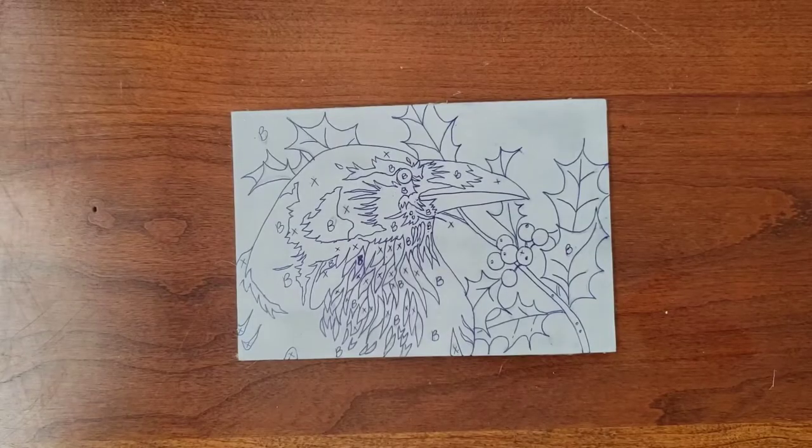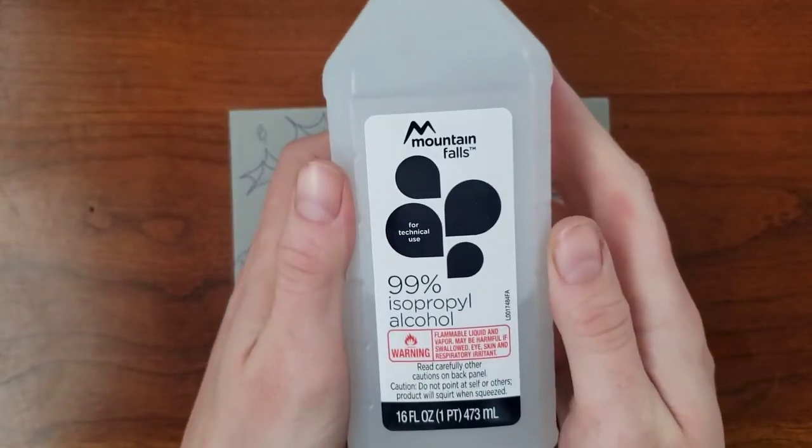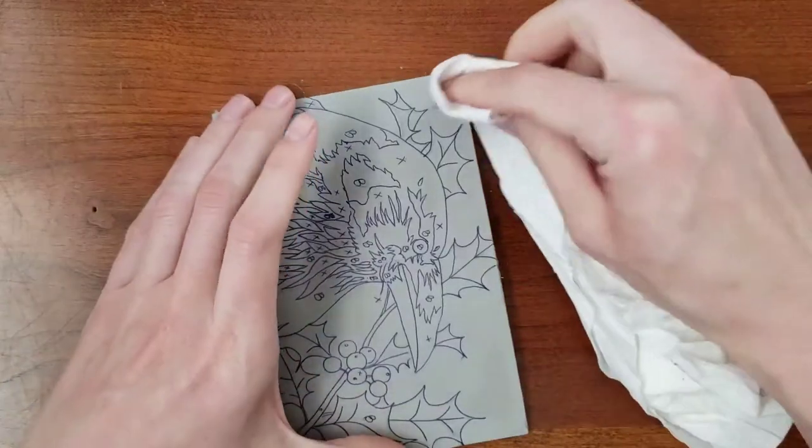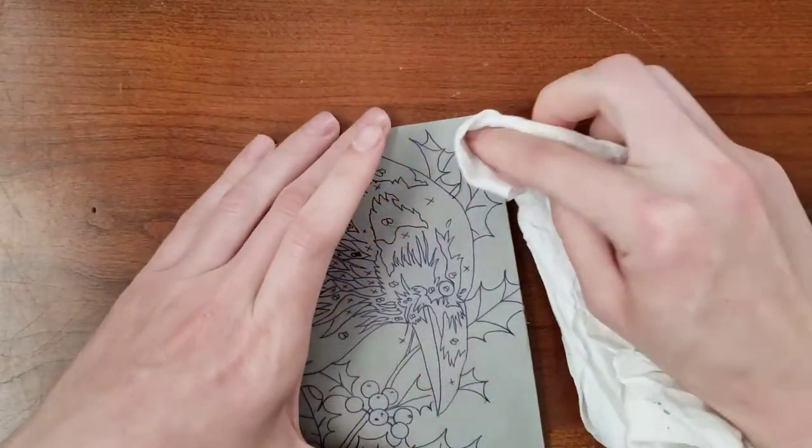If you need to erase part of your drawing, or even the entire thing, you can use rubbing alcohol. I will demonstrate on a small area of this block because there are more steps to this process I'd like to show you.